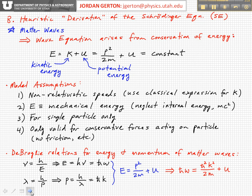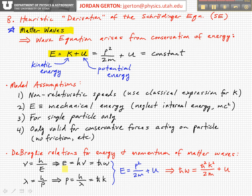Starting with conservation of energy, we can also use the De Broglie relations — because we're talking about matter waves, particles have wave-like properties. The two De Broglie relationships are: the frequency of the matter wave is equal to Planck's constant divided by its energy, and the wavelength is equal to Planck's constant divided by its momentum.